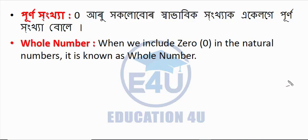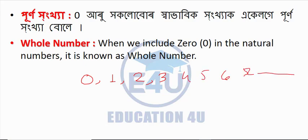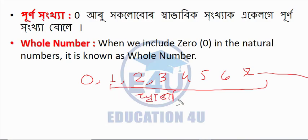When we include 0 in the natural numbers, it is known as whole numbers. The whole numbers are 0, 1, 2, 3, 4, 5, 6, 7, 8 and so on.